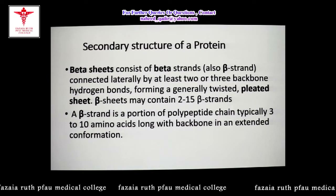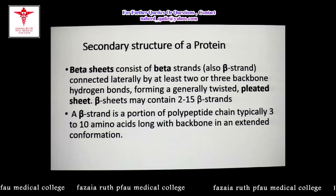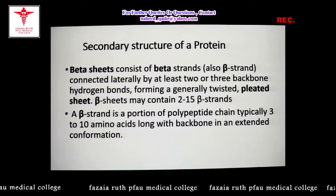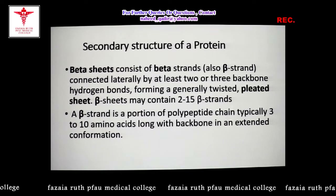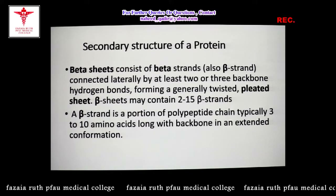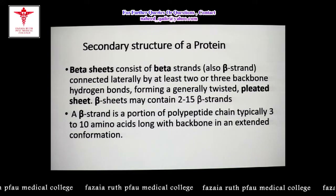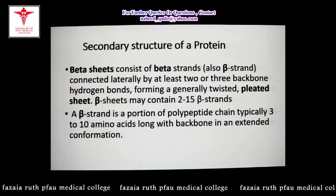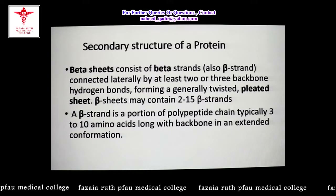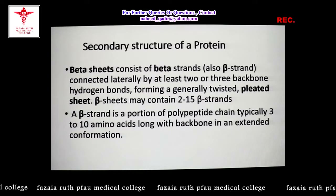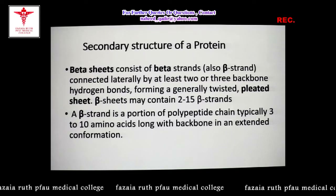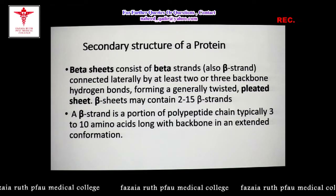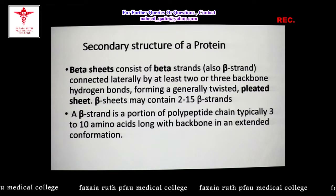An example of the alpha helix is alpha-keratin. Alpha-keratin is normally found in hair, nails, and the skin of human beings.